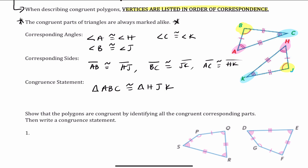However, on the right-hand side of the congruence symbol, you need to list in order of correspondence. We said A is the first letter, so H is also the first letter. B is the second letter, so J is the second letter. C is the third letter, so K is the third letter. That's how we write a congruent statement.